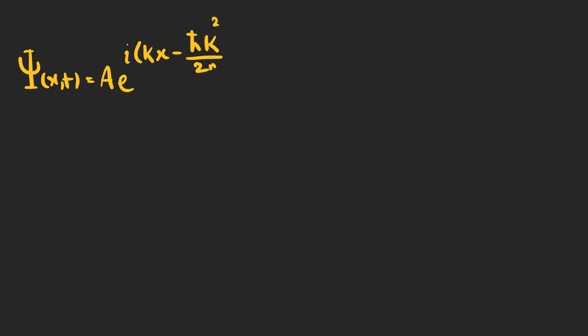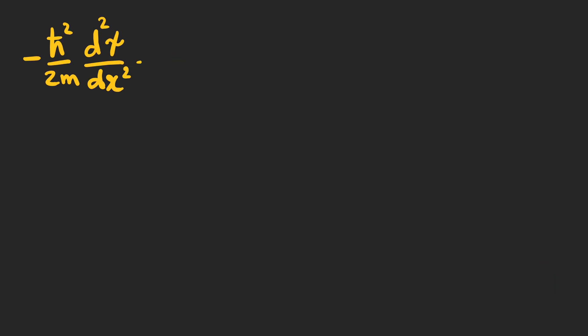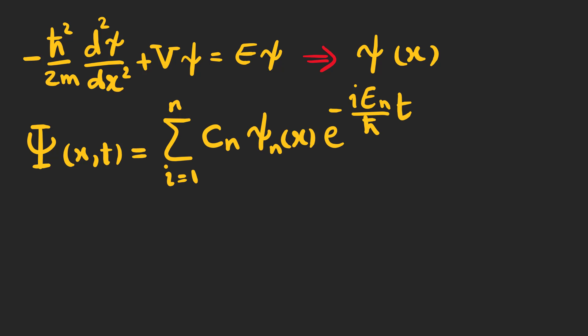There is another problem with this wave function, and it is the fact that it is not normalizable, meaning that a free particle cannot exist in a stationary state with a definite energy. In previous examples, we used the time-independent Schrödinger equation to find the stationary states.